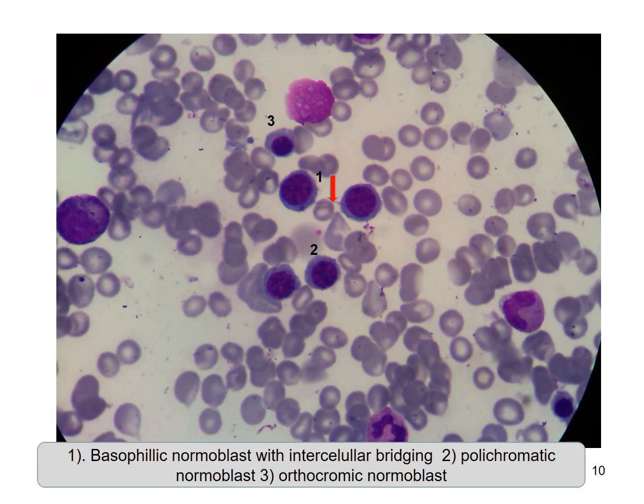We can see number 1 is the basophilic normoblast, number 2 is the polychromatophilic normoblast, and number 3 is the orthochromic normoblast. The red arrow shows internuclear bridging between basophilic normoblasts, which is commonly found in MDS.